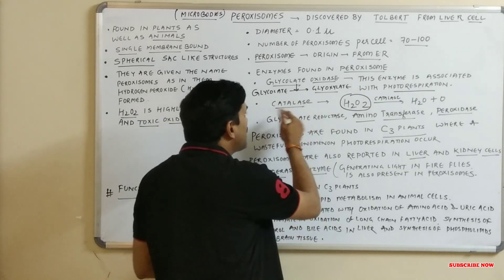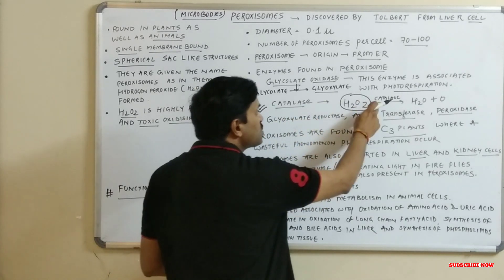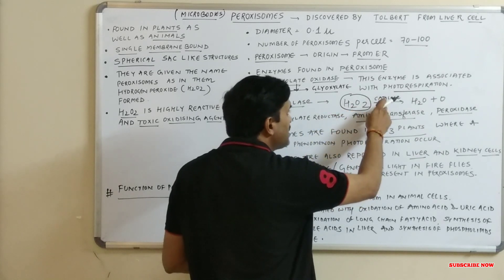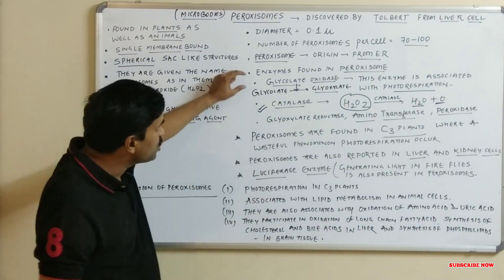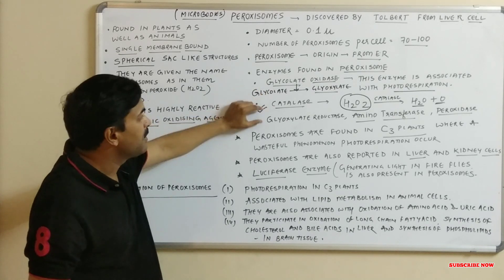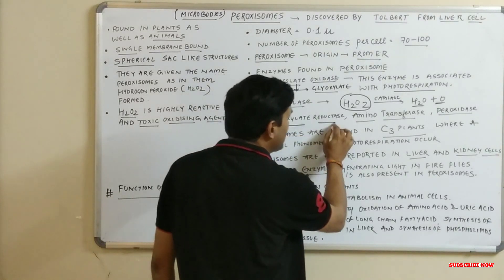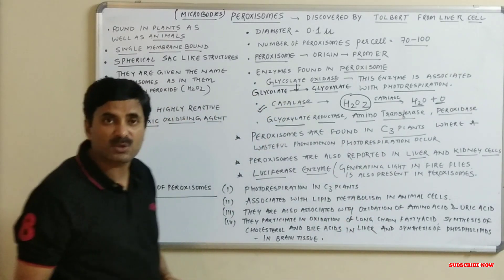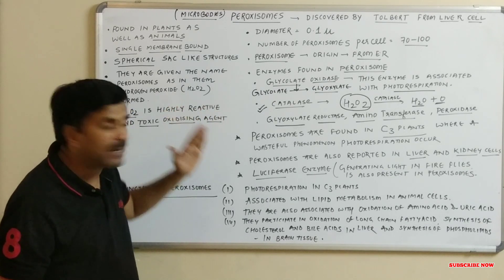Since H2O2 is a toxic oxidizing agent and highly reactive, another enzyme found in peroxisomes — known as catalase — carries out the lysis of this hydrogen peroxide, converting it into water and oxygen. Not only glycolate oxidase and catalase, but certain more enzymes are found in peroxisomes, such as glyoxylate reductase, amino transferases, and peroxidase enzymes.